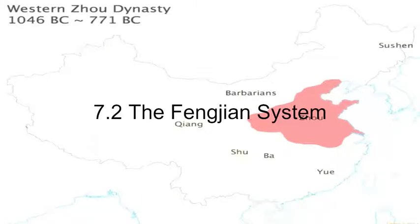That was 7.1. Let's now move on to 7.2, the Feng Jian system, which is covered in the homework. The first page is a thought exercise — imagining if the United States underwent a civil war, the Constitution gets ripped up, and you are now in control. That exercise asks you to think about how many trusted friends and family you would delegate land to in order to help govern your empire. That is essentially what the Feng Jian system is about.